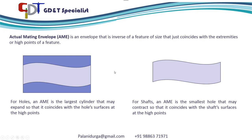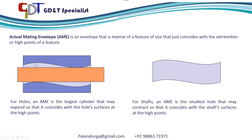To understand this better we take a few examples. First, for a hole, actual mating envelope is the largest cylinder that may expand so that it coincides with the hole's surface at high points. Here, this is the maximum shaft diameter that can enter into this hole because the shaft diameter is touching the high points. This largest cylinder diameter is the actual mating envelope for this internal feature.